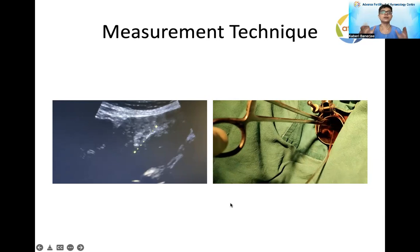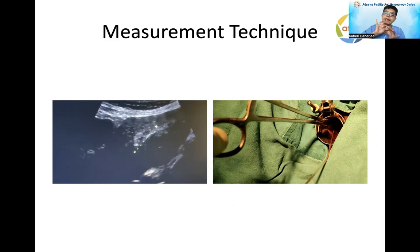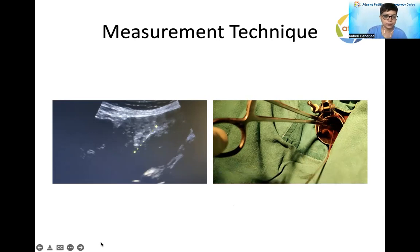The measurement technique involves measuring from the outer catheter positioned at the internal os to the point of maximum implantation potential. When you are not able to see clearly, you go in using that measurement and place the embryos at that calculated depth.